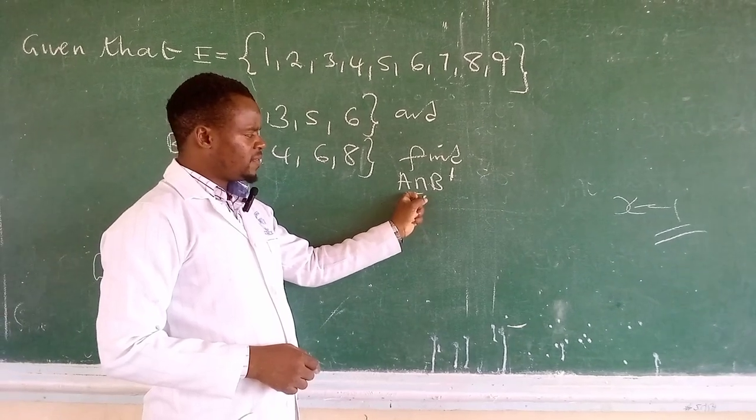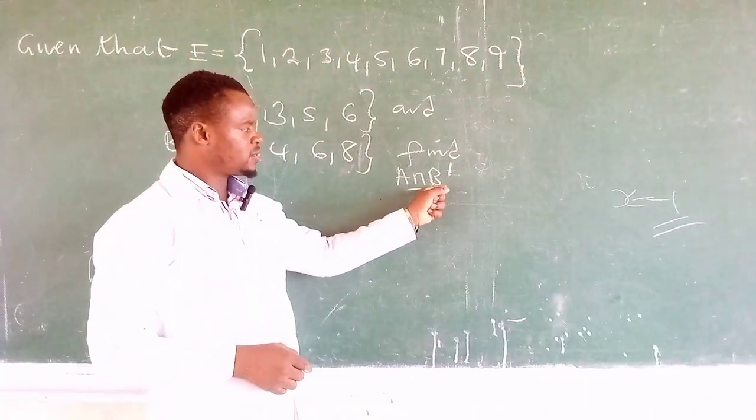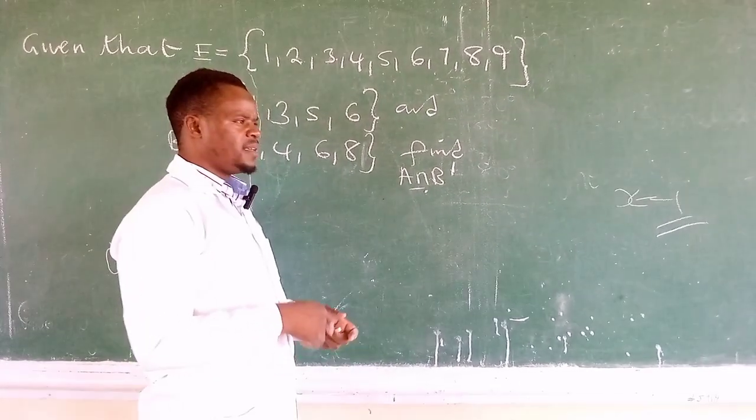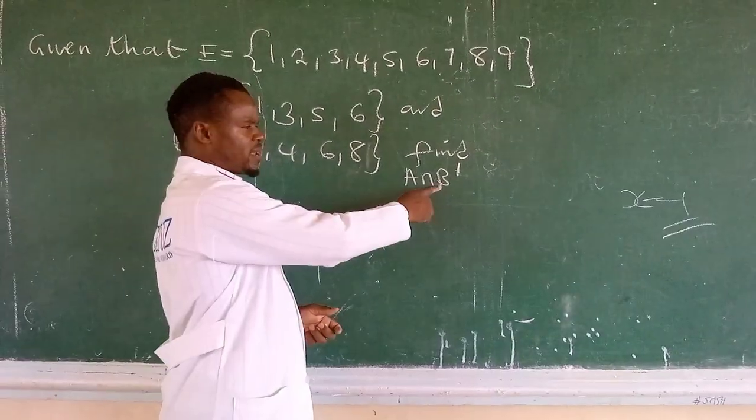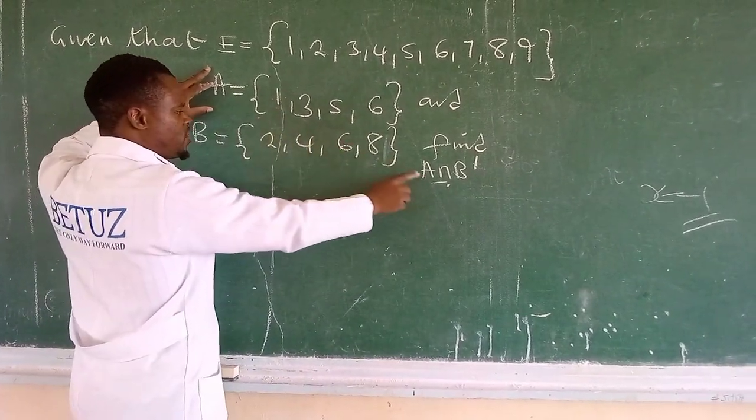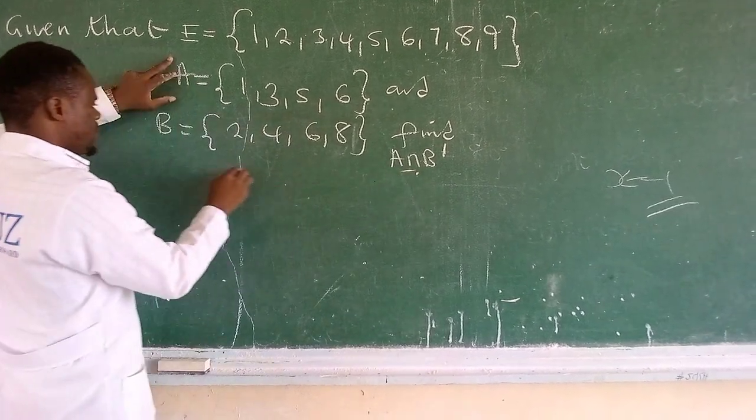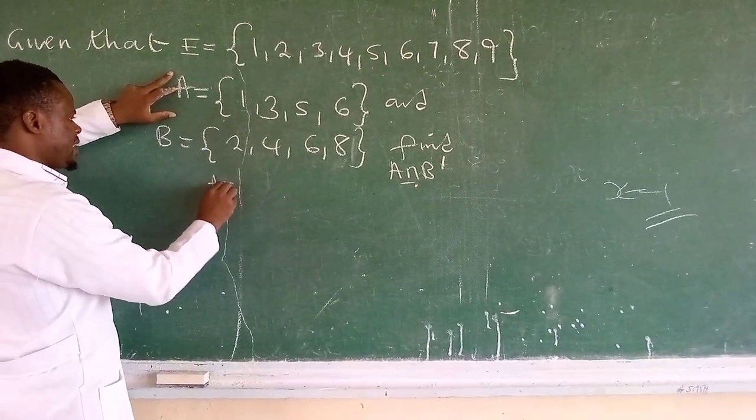This time around, what we want to find is the intersection set of set A and set B complement. So B complement is the elements that are not found in set B. Since we already have set A, we need to come up with set B complement.